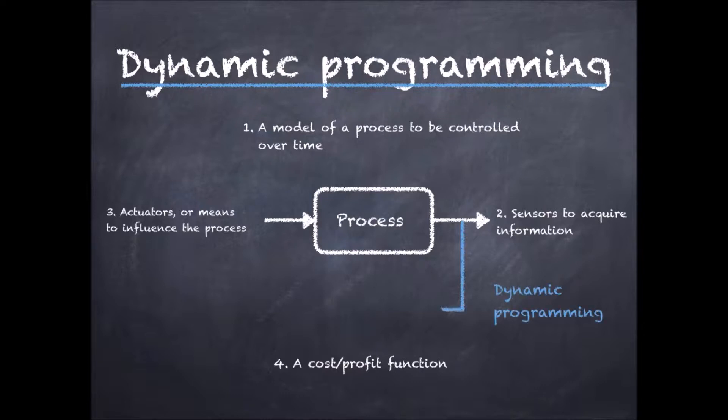Dynamic programming allows to find a control law to provide optimal actions based on sensor information. This policy or control law is optimal in the sense that from all the possible control laws, there is no law which results in a better cost for the system.